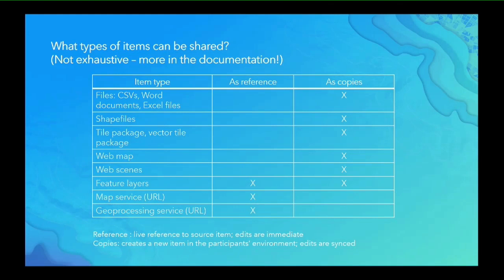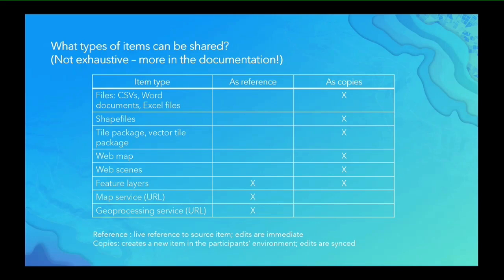What types of items can be shared? This is not an exhaustive list, but anything from flat files, CSVs, Word documents, Excel files, shapefiles, web maps, and more. The table outlines what can be shared as a reference versus as a copy. As a reference, I'm sharing live access to my source item — the URL in the guest's portal references my source URL. As a copy, I'm creating a new hosted feature layer in their portal. For reference, edits are visible immediately; for copies, edits synchronize on a schedule between one hour and once daily.